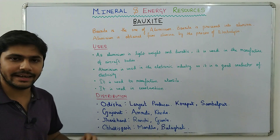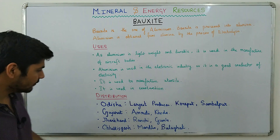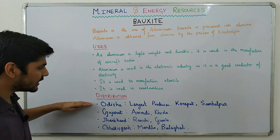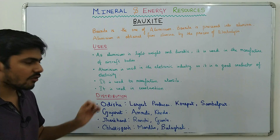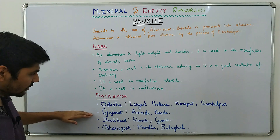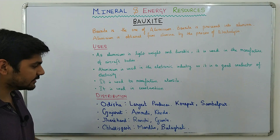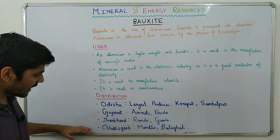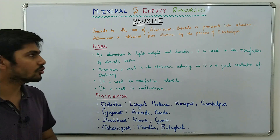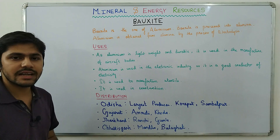The distribution of bauxite in India: the four main producing states are Odisha, Gujarat, Jharkhand, and Chhattisgarh. Odisha is the largest producer, with locations at Koraput and Sambalpur. In Gujarat the locations are Amreli and Kheda. In Jharkhand the locations are Ranchi and Gumla. In Chhattisgarh, bauxite is found in Mandla and Balaghat.